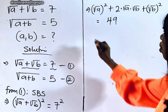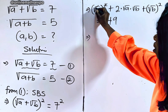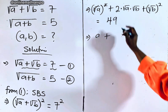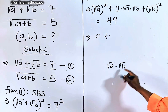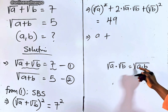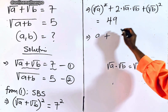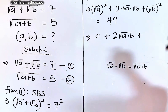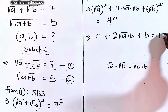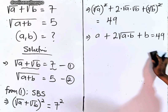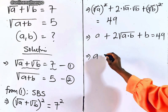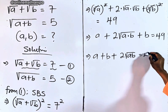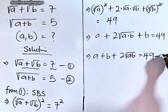The (√a)² cancels the square root, leaving a. Similarly (√b)² gives b. So we have a + 2√(ab) + b = 49. This is the same as a + b + 2√(ab) = 49. Let's call this equation 3.